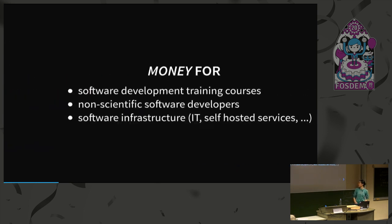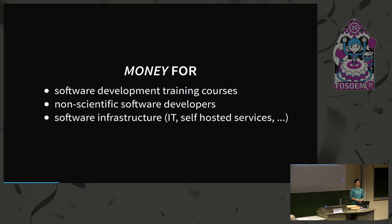Money is also an issue. Money needs to produce publications and is not usually available for sending your scientists to training courses on software development. There's also not a lot of money, as Jan mentioned, for having non-scientific software developers in your lab, or for having the infrastructure to develop software — like running your own continuous integration system.